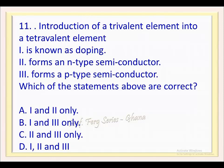Question 11. Introduction of a trivalent element into a tetravalent element: 1. is known as doping, 2. forms an n-type semiconductor, 3. forms a p-type semiconductor. Which of the statements above are correct? a. One and two only, b. One and three only, c. Two and three only, d. One, two and three.